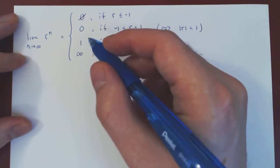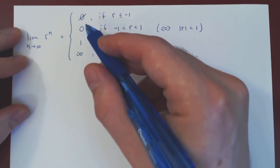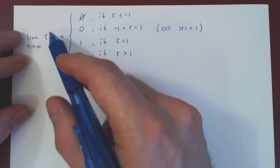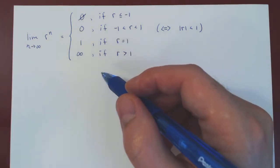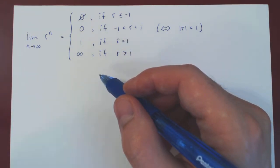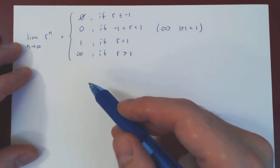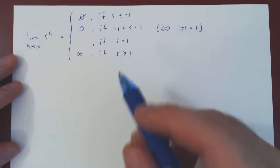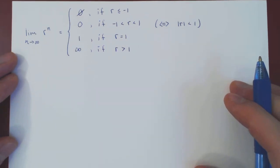In the previous video, we gave a very intuitive argument as to why these are the possible results when it comes to the limit of a geometric sequence. In this video, we want to give a more rigorous argument as to why this is actually correct. And all we need, surprisingly, is our knowledge of the natural logarithmic function, one of its properties, and its graph.